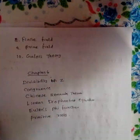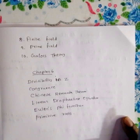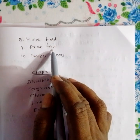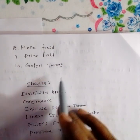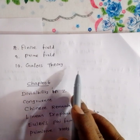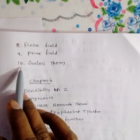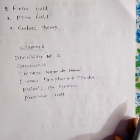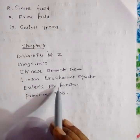Finite fields are of prime power order. A finite field can be viewed as a composite field. We will also cover Galois theory, which relates field extensions to group theory, including the Euler phi function.